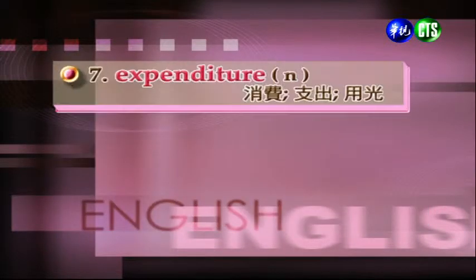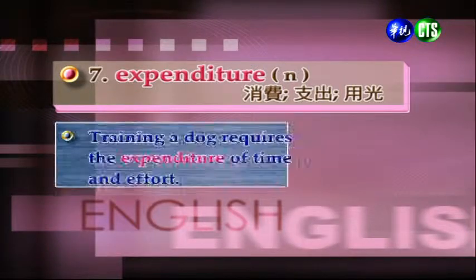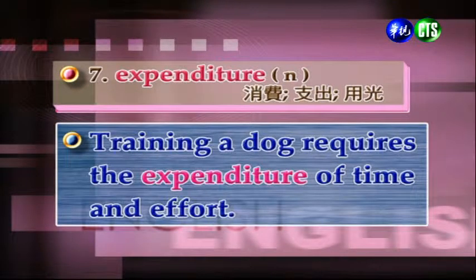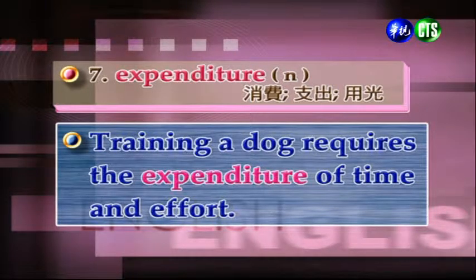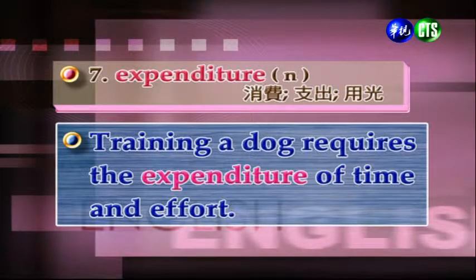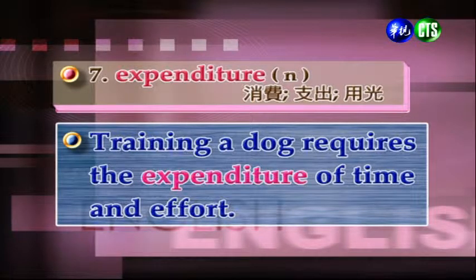好，我們往下看：Expenditure。Expenditure，名詞，消費、支出、用光。例句：Training a dog requires the expenditure of time and effort. 訓練一隻狗狗，是需要時間的花費，還有精神上的努力。Effort是努力。